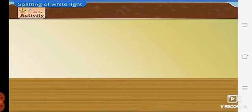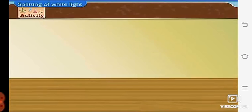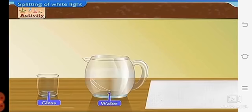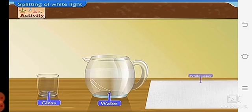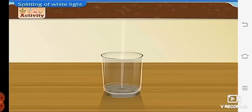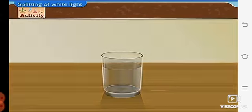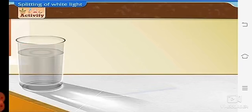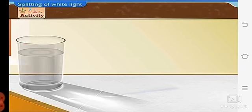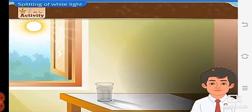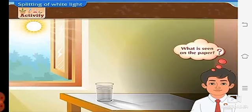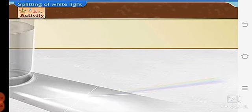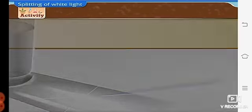That is splitting of white light. The apparatus required are a glass, water, a large white sheet of paper. Now, fill the glass with water and place the glass on the white sheet in the window, so that it receives direct sunlight. What is seen on the paper? Yes, we can see seven different colors on the paper.